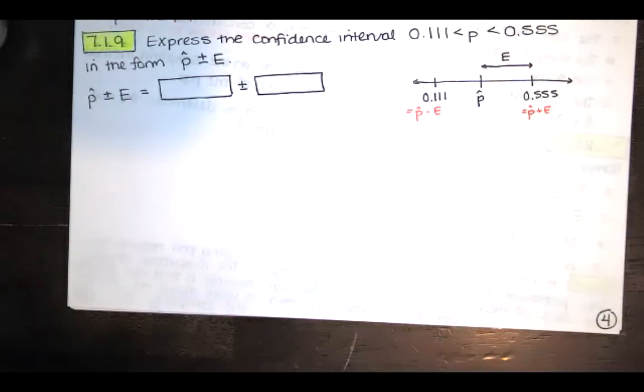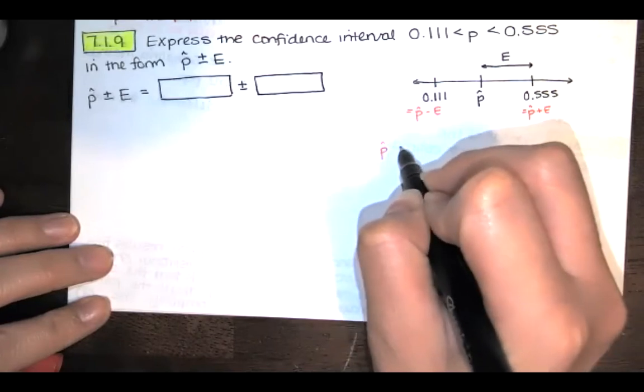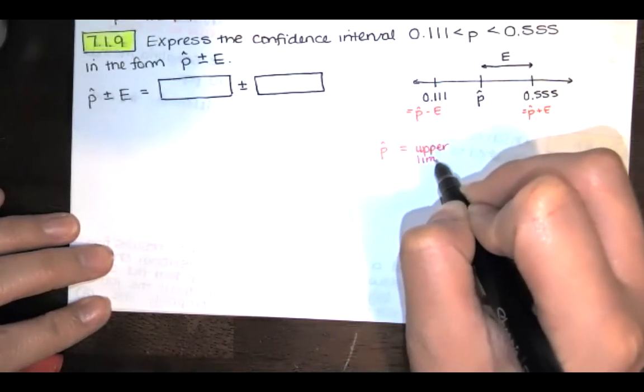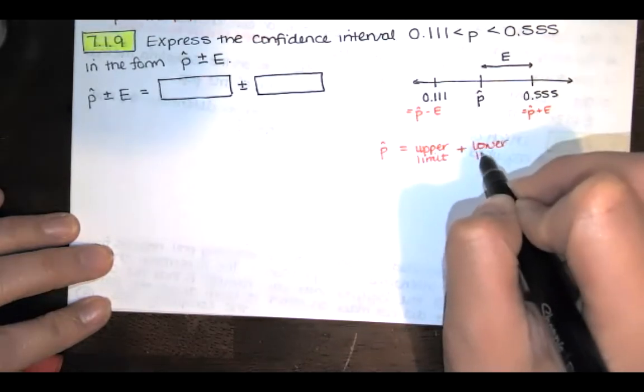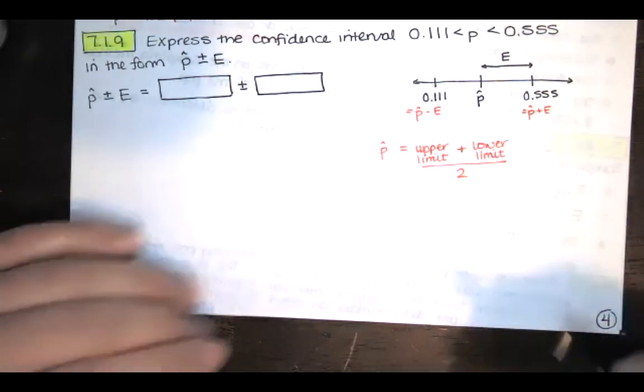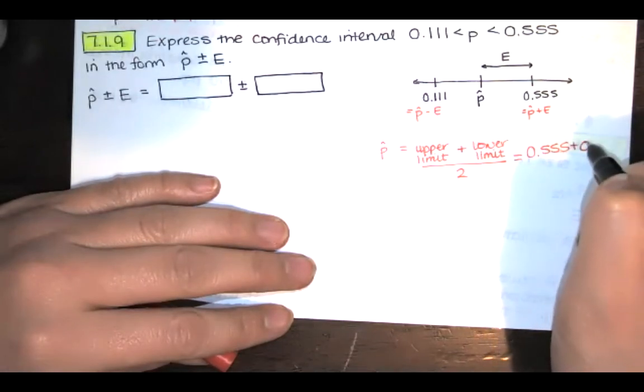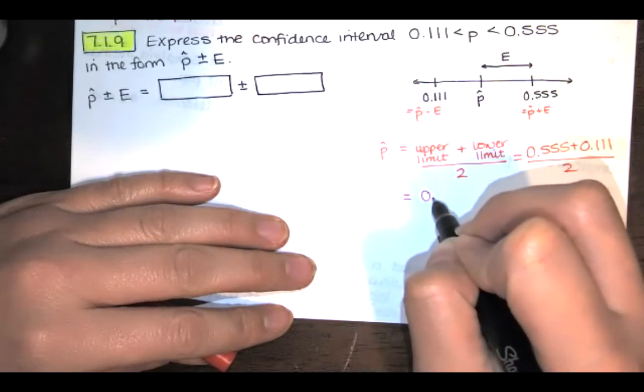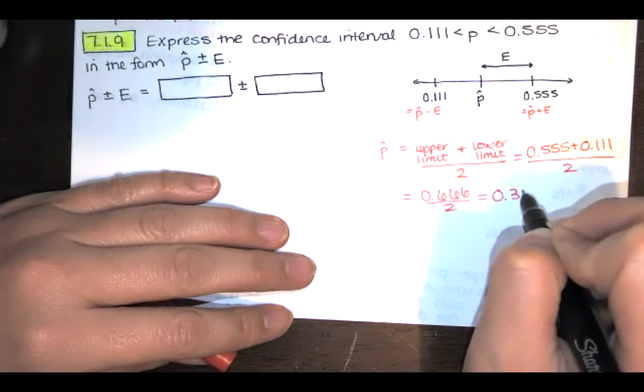So if I want to find p hat it's actually pretty simple. All you do is you take the maximum value for that upper limit of your confidence interval and then you add the lower limit of your confidence interval, and you're averaging those so you divide by 2. So we're just going to have 0.555 plus 0.111 divided by 2 which gives us 0.666 divided by 2 which is 0.333.